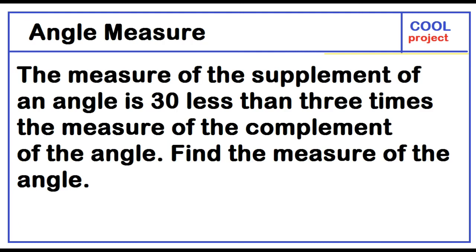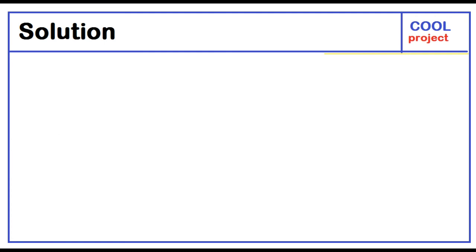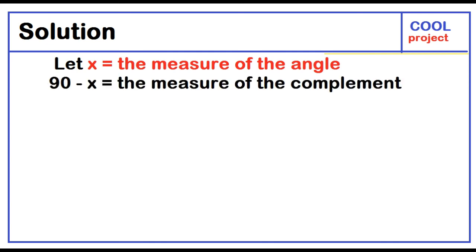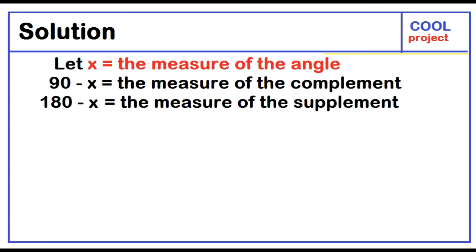The measure of the supplement of an angle is 30 less than 3 times the measure of the complement of the angle. Find the measure of the angle. Solution: let x represent the measure of the angle. 90 minus x represents the measure of the complement. 180 minus x represents the measure of the supplement. The equation is 180 minus x equals 3 times the quantity 90 minus x, minus 30.